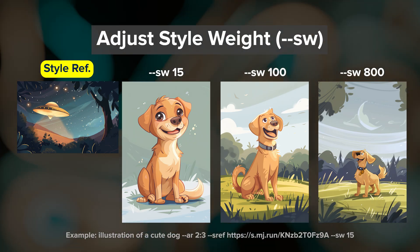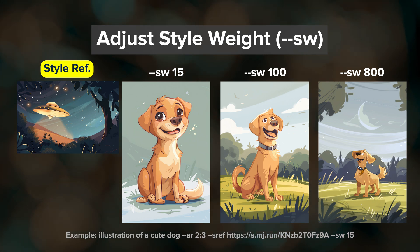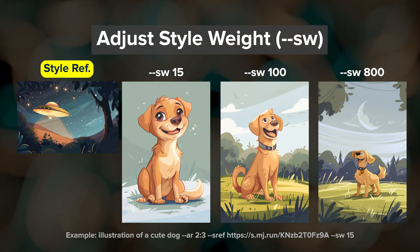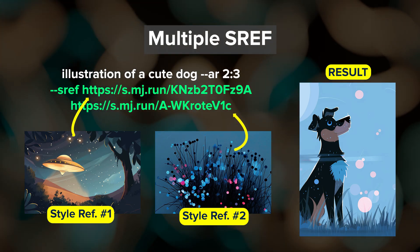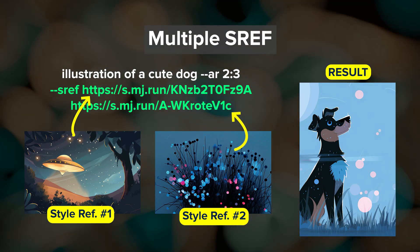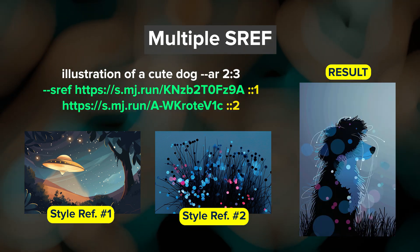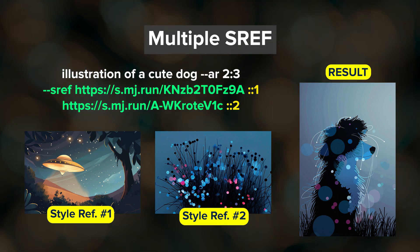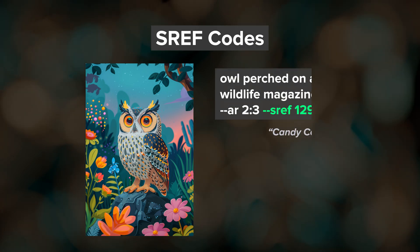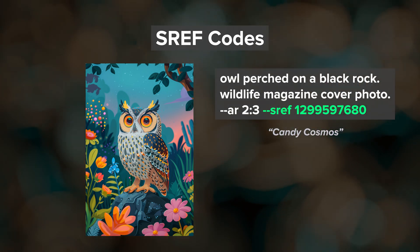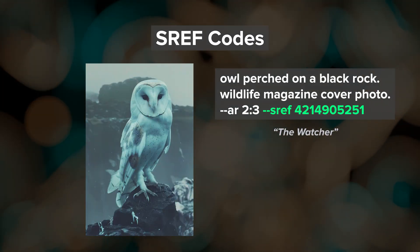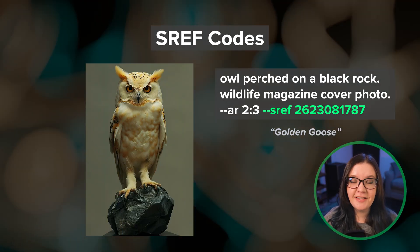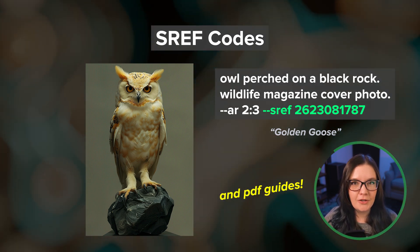You can control the weight or influence of the style reference with the style weight parameter --sw. The default value is 100 and the range is 0 to 1000, where 1000 is maximum strength. You can paste in multiple image URLs to use as style references, and you can use the multi-prompting notation to give a specific style reference image a higher or lower relative weight within the overall style reference blend. Depending on the MidJourney model you're using, there are also style reference code numbers that can be used here instead of an image URL. Style reference is a powerful feature and my favorite MidJourney feature — I have several videos covering this topic if you want to learn more.